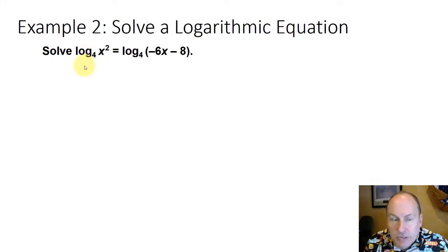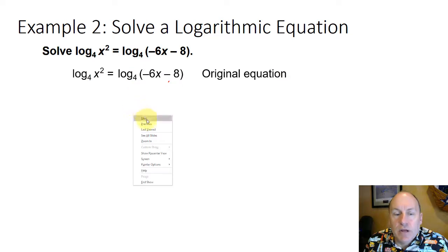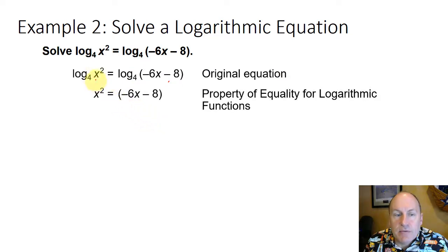If we're going to find the solution to log base 4 of x squared equals log base 4 of negative 6x minus 8, since the bases are the same in this original equation, we can set the inputs equal to each other because of the property of equality for logarithmic functions. Therefore, x squared must equal negative 6x minus 8. Add 6x plus 8 to both sides.